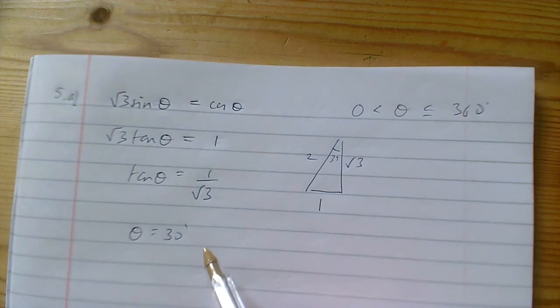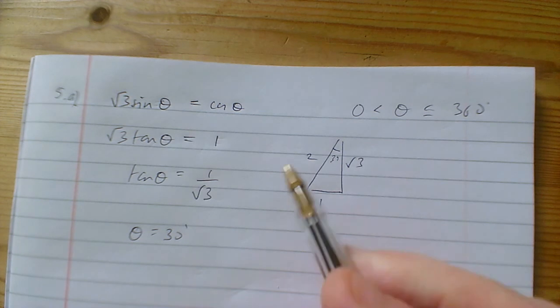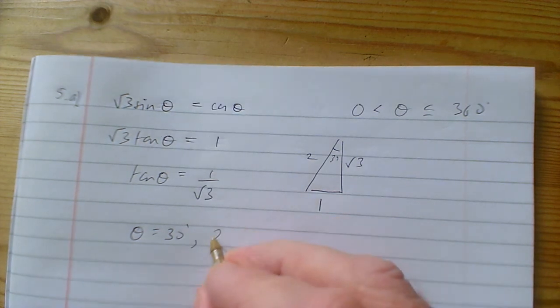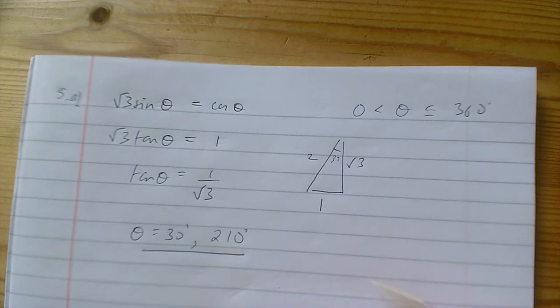Since tan has period 180 degrees, the only other solution in the required range is 210 degrees.